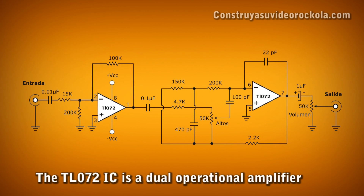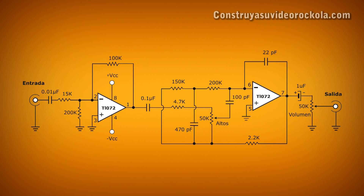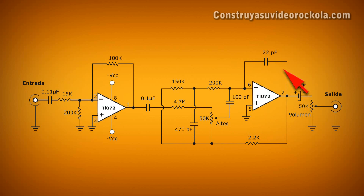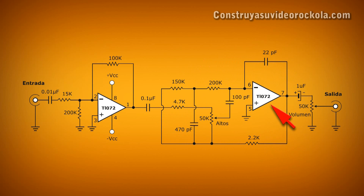The high pass filter has two operational amplifiers used in two stages. The first operational amplifier receives the signal through a 0.01 µF capacitor, which restricts the passage of low and medium frequencies. The first operational amplifier preamplifies the signal to be received by the second, which enhances the high frequencies and lowers the mid-range and low frequencies again, achieving a single high frequency output only.